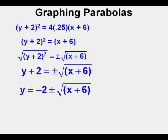As our final step, we subtract 2 from both sides of the equation to isolate y, which gives us y equals -2 ± the square root of quantity (x + 6).